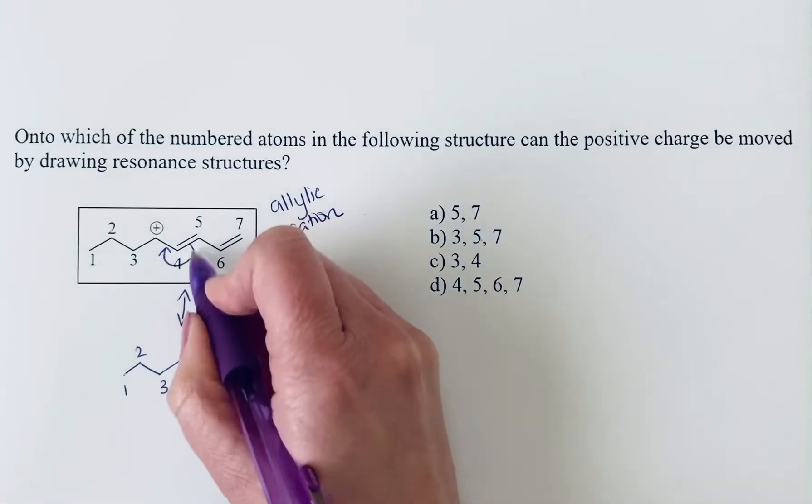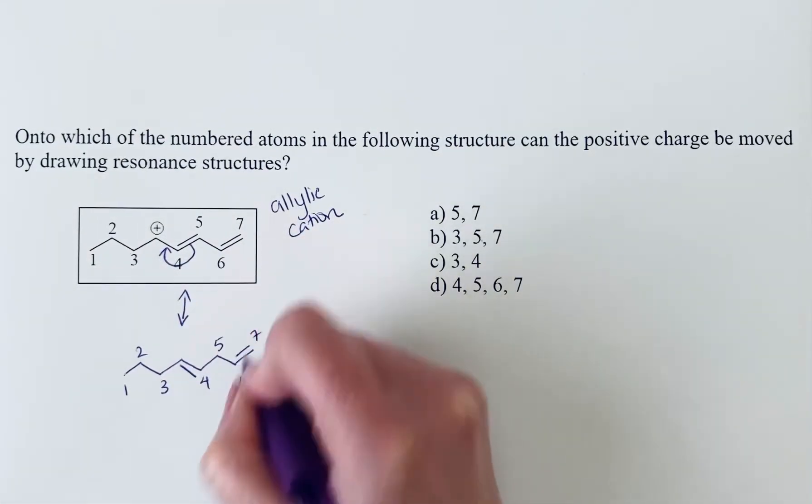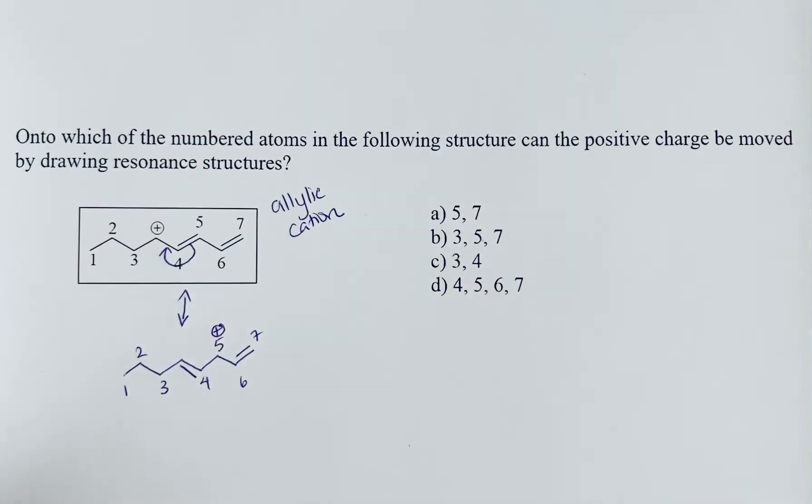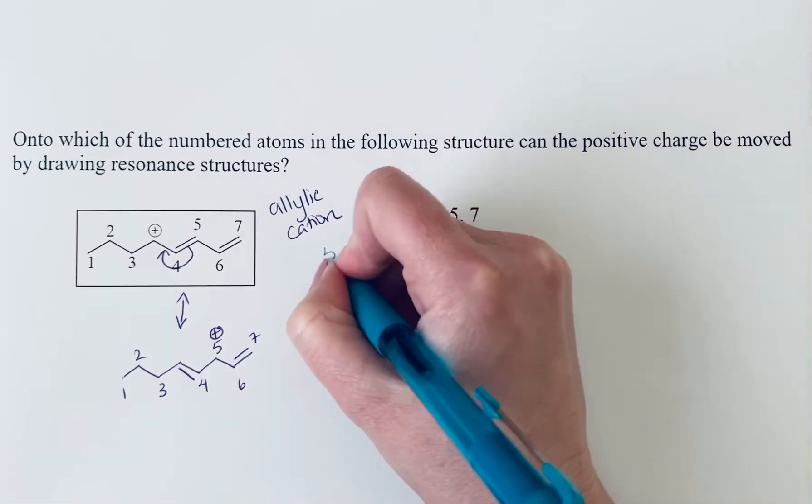So we moved this pi bond in here. We still have a pi bond here. And that puts the positive charge on carbon five. So five is one of the atoms.